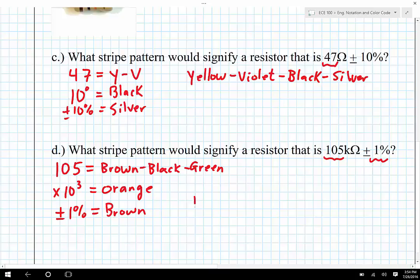And so therefore my full color stripe pattern will be brown, black, green, orange, and brown. Remember that these three stripes here correspond to the 105, this is the exponent, and then this one is the tolerance.